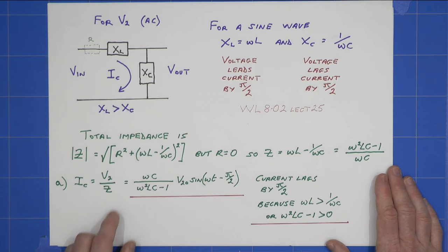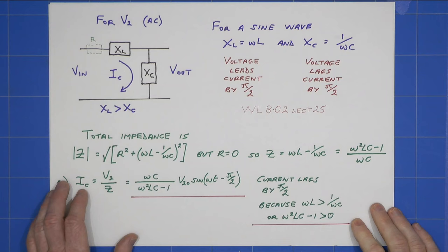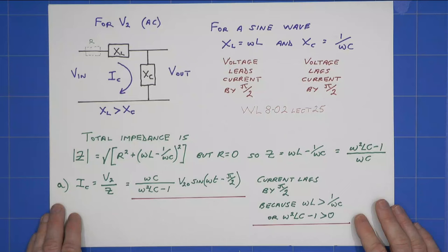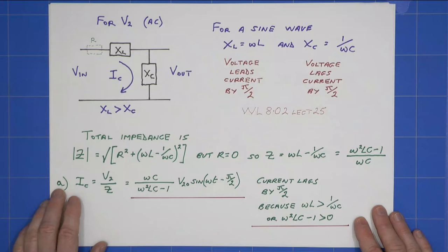which is the name given the combination of resistance and reactance, would be that. That's the modulus of it. But R is zero, so the impedance simply becomes this, which I can rearrange to that. So, part A,